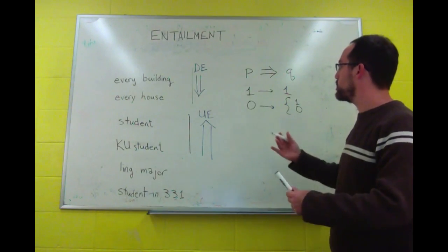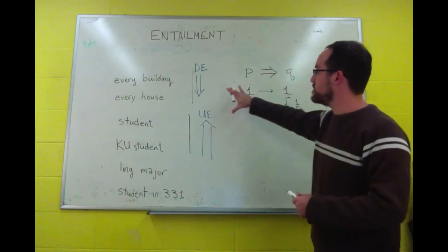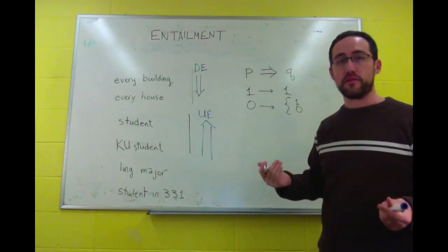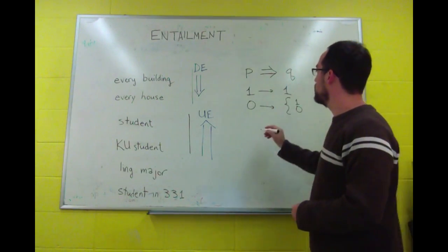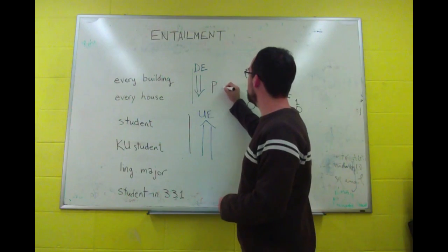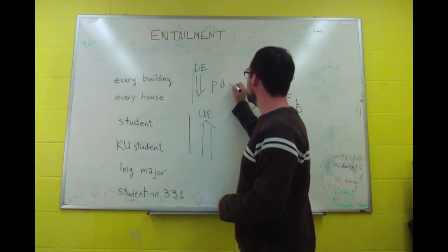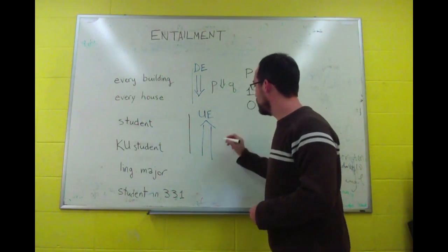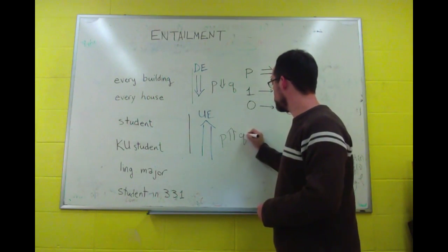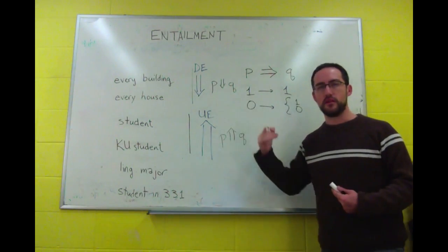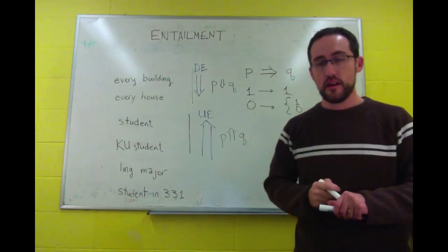And for our purposes, we can use these symbols, up and down, to be more precise. So we can say P entails Q, but we could also say that P downward entails Q, or we could say that P upward entails Q.